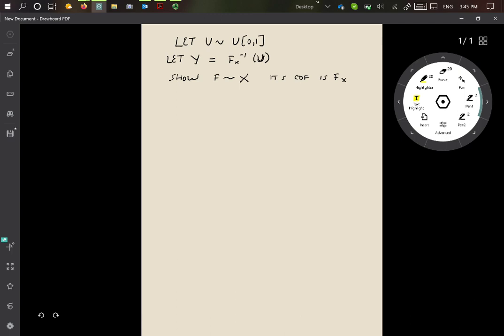So its CDF is F_X. How do we show that? Let's start very simply. The probability that Y is less than or equal to any value alpha is going to be given by substituting for Y as probability that F_X inverse of U is less than or equal to alpha.